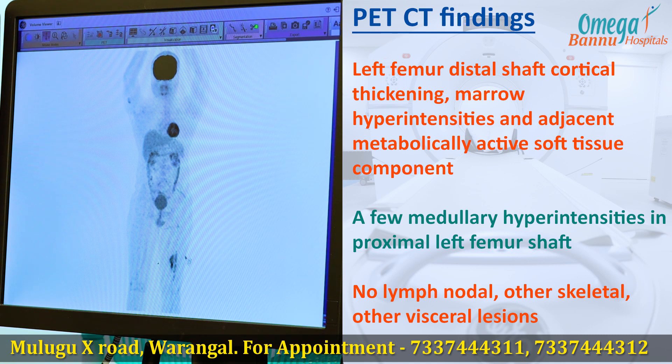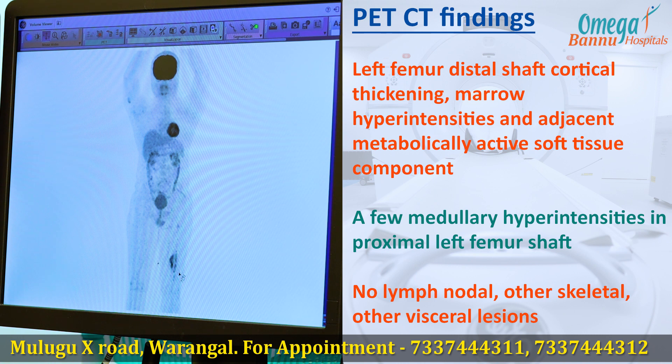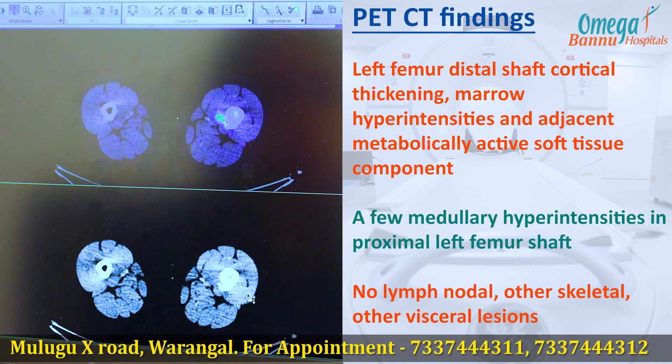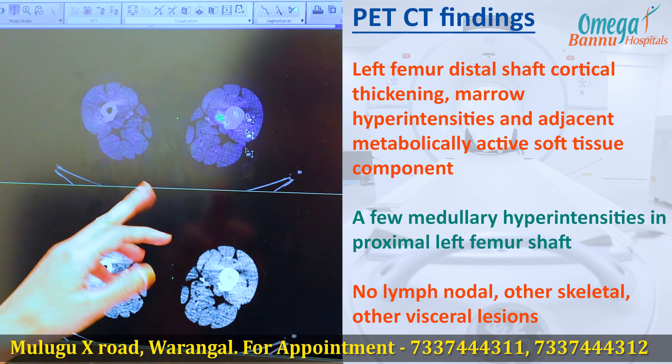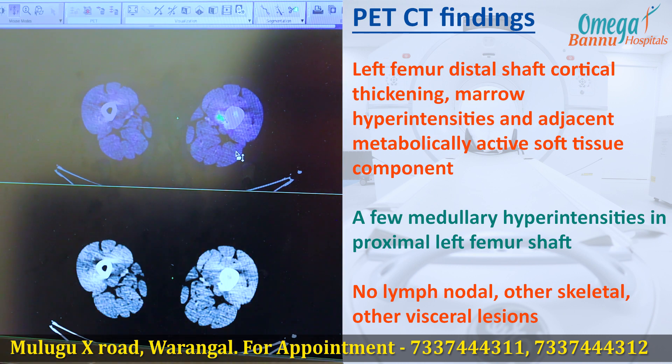On the MIP image, we find tracer uptake in the distal femur region and adjacent soft tissues. Moving on to the transaxials,